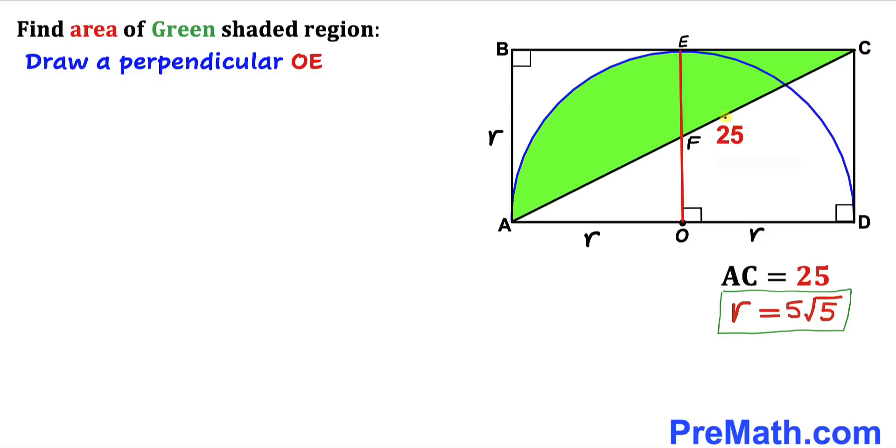And here's our next step. Let's go ahead and draw a perpendicular OE on this diameter AD as you can see over here. And as a result we got these two right triangles AOF and CEF.